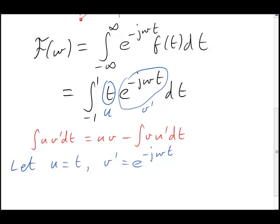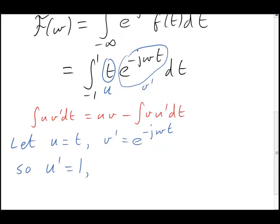We need to calculate v. u primed, at least, is very easy. It's just 1. And there's v. It's the same exponential, but we have to divide it by the coefficient of t. That means we multiply it by minus 1 over j omega outside. Let's put all that together into the integration by parts formula.